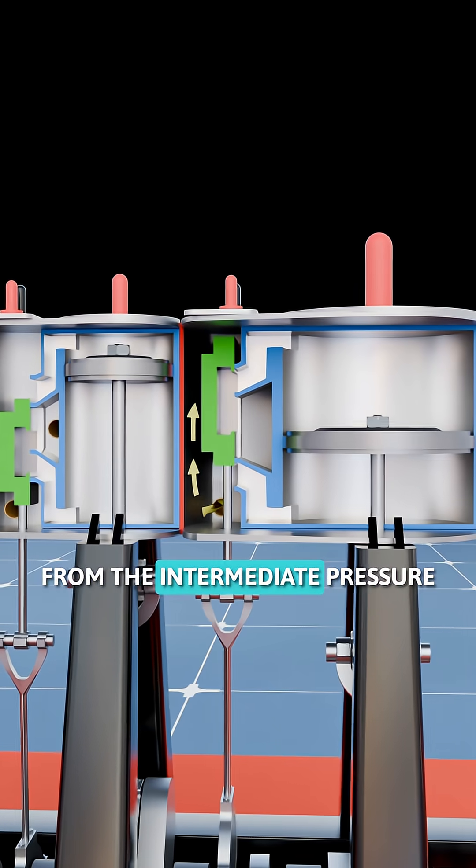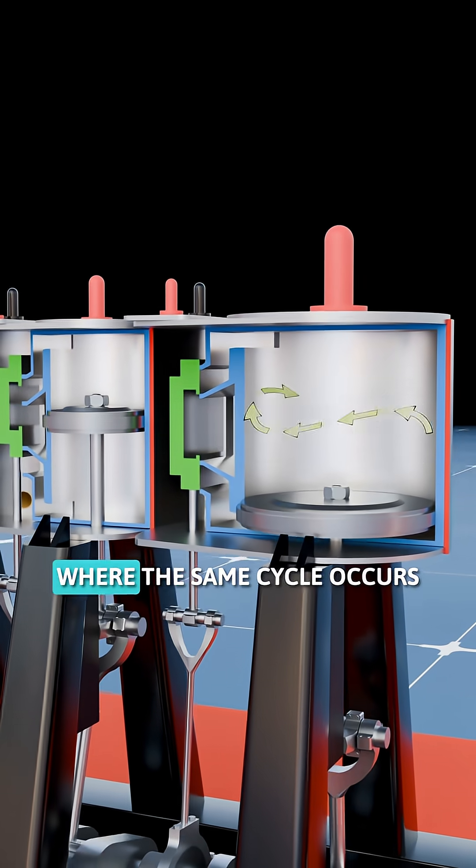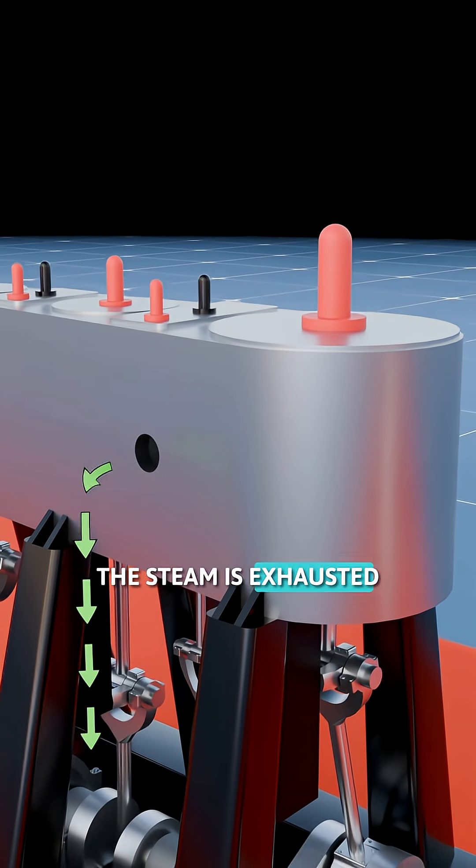Finally, the exhaust from the intermediate pressure cylinder enters the largest low-pressure cylinder, where the same cycle occurs once more before the steam is exhausted into the condenser.